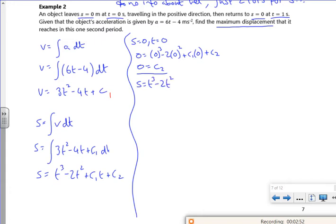What a funny looking question. So c2 is 0, so we've got c1 times t. So now I'm going to use the fact that s is 0 and t is 1.